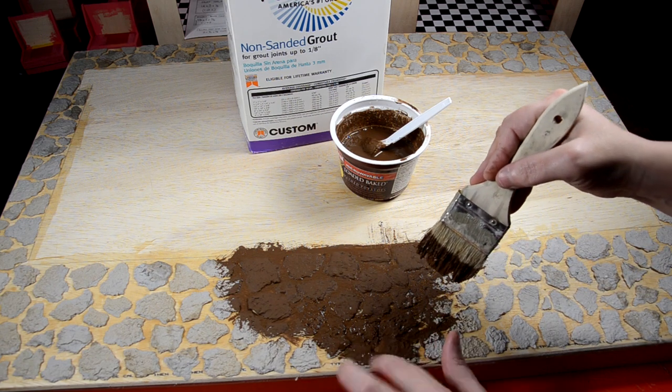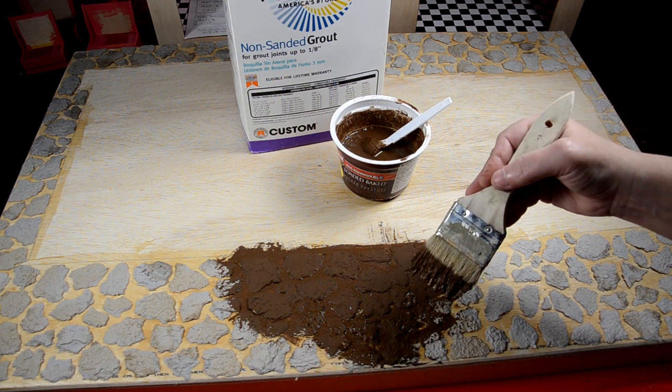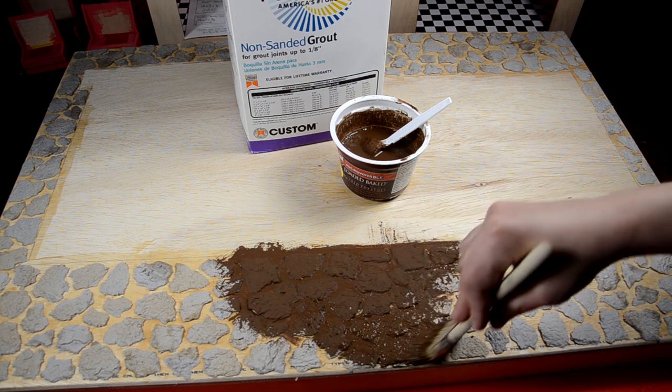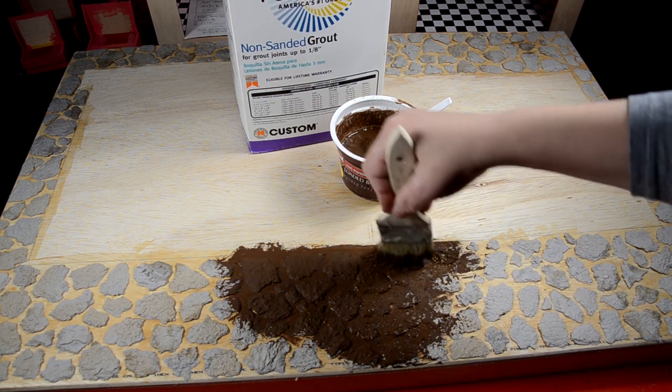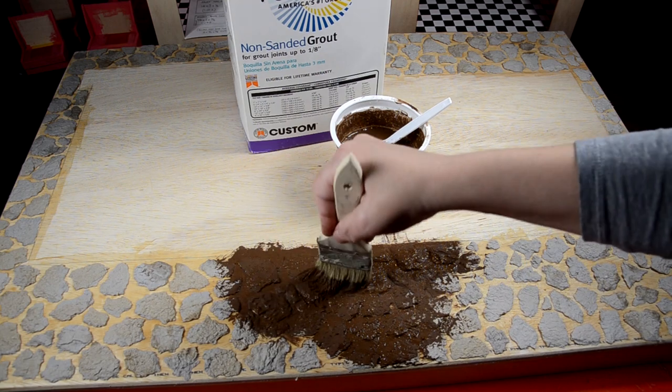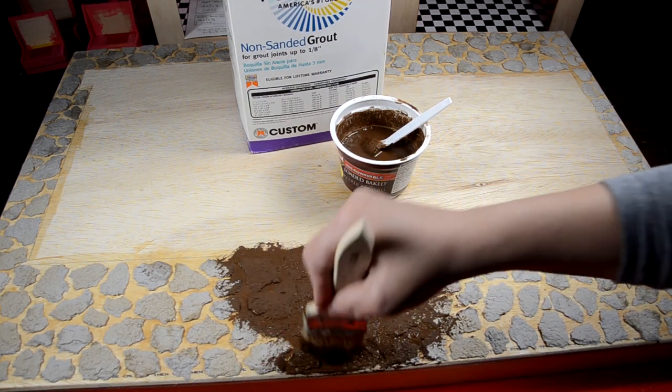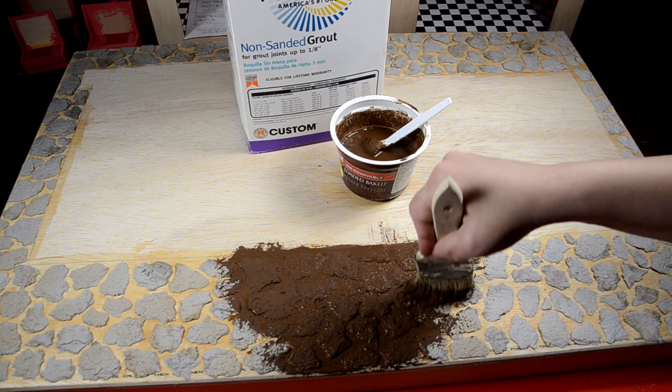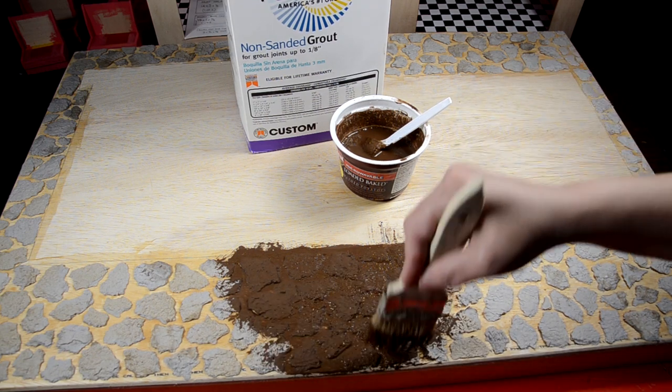If your brush is really cheap like mine is and it leaves these little stragglies, pull them off before they dry, otherwise it will be really hard to get them off afterwards. You also want to, once you get it spread on there, go back on top of it and blot it so that you don't have the brush lines.